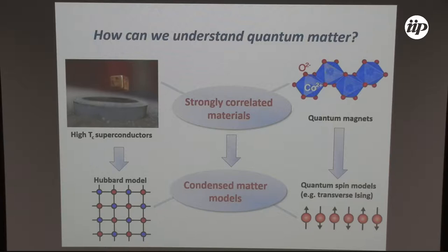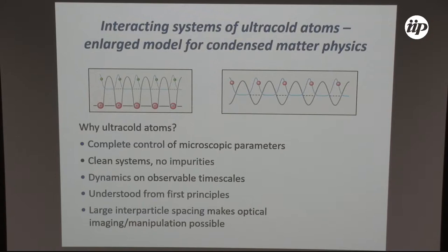On the other side, quantum magnets can be relatively nicely described by quantum spin models. In the second part I will shortly show some results on a transverse Ising model.